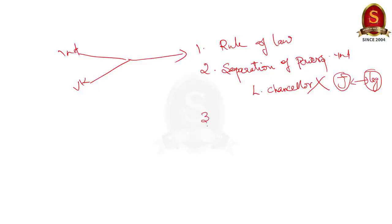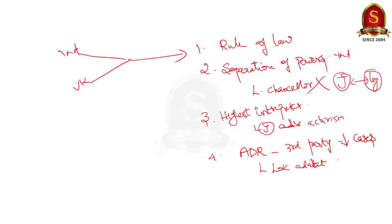The third point is that the judiciary is considered as the highest interpreter of the constitution. Recently there has been a surge in the judicial activism in Britain and judiciary is becoming more and more active. A similar evolution of judiciary has been noticeable in Indian case too. And the fourth point here is alternate dispute resolution mechanisms. See ADR are evolving in both India and UK. They are nothing but an out of court settlement using third party as a mediator. It just helps to reduce the burden of cases on the courts. Example in India we have Lok Adalats and legal service authorities. UK too adopted ADR for consumer disputes.